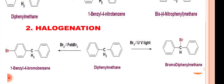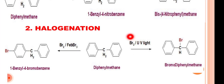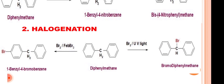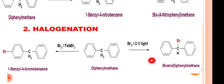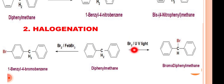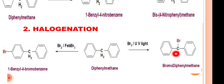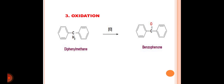When diphenylmethane is reacted with bromine in the presence of ultraviolet light, the reaction is a free radical substitution reaction, which chiefly takes place on the benzylic carbon. One of the hydrogens and a bromine are liberated as HBr, and the second bromine, being a free radical, attaches on the benzylic carbon to form bromodiphenylmethane.